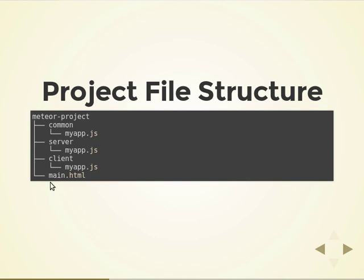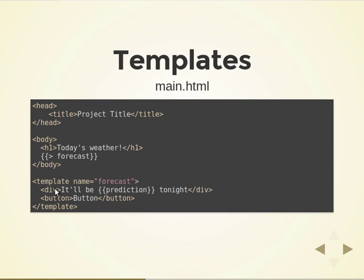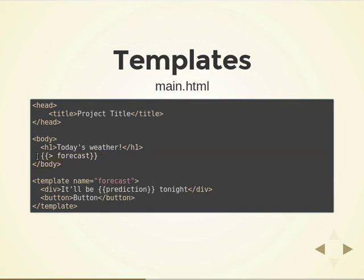And you have the templates. This is an example template — it looks like HTML but it only uses the markup of HTML. Templates in Meteor have three types of containers: one for head, one for body, and one for general templates. Whatever you put in head, Meteor will put in the head section of the eventual HTML page. Whatever you put in body is essentially the main template that will load other templates. In that case, you can see it says 'today's weather' and then it loads the forecast template.